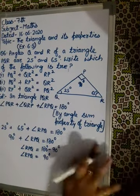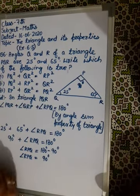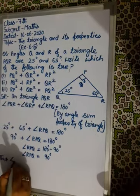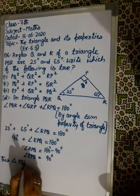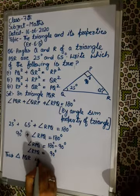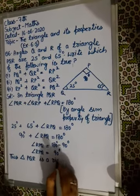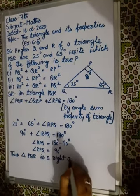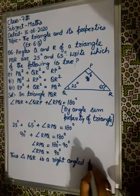Thus, triangle PQR is a right-angled triangle, right-angled at point P.